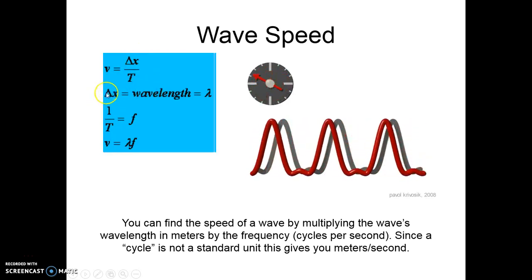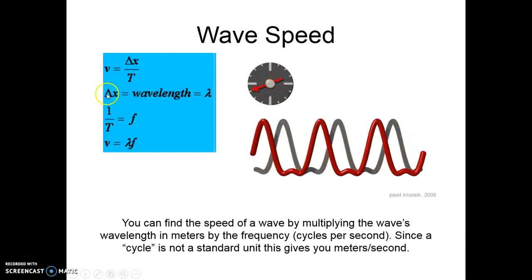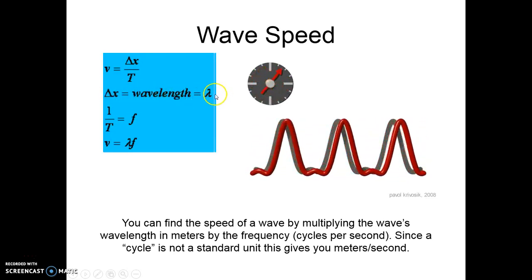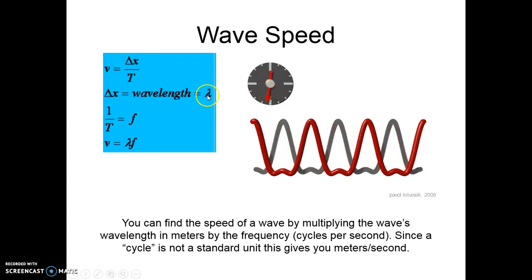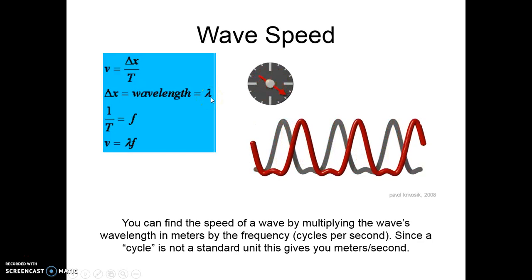So this delta x, my change in position, this is usually we'll use this for my wavelength. Here, the specific variable that we use, the letter we use for a wavelength, that's lambda, it's like an upside-down y. That's my wavelength.